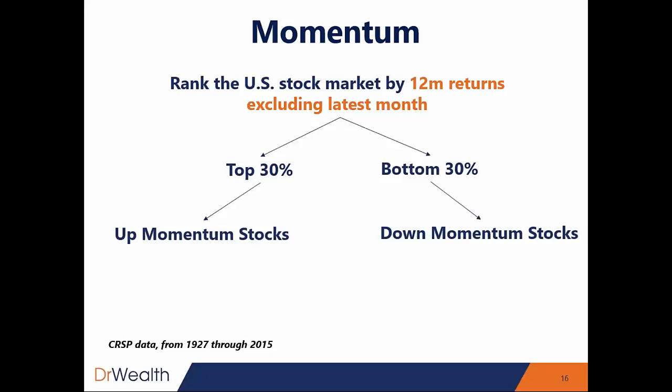You want to compare the difference. If you long the up-momentum stocks and long the down-momentum stocks in the same period, each year the up-momentum stock portfolio will give you 9.6% per year. This is a bit counterintuitive compared to value stocks, because with value you usually buy low and sell high, whereas with momentum you are buying the highest-priced stock for that year. That generated an outsized 9.6% per year return. Momentum gives you the highest performance gap compared to the other factors discussed.